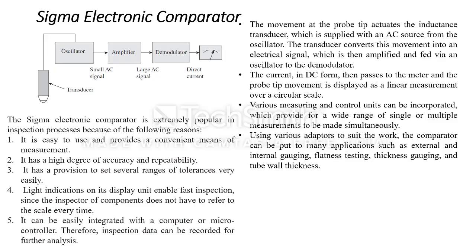This is what the Sigma electronic comparator is. The movement in the probe is connected to a transducer, where the movement of the probe is sensed by the sensor. The output is a DC signal connected to an oscillator, giving a small AC signal, then connected to an amplifier to get a large AC signal, connected to a demodulator, which gives a DC output connected to a dial.